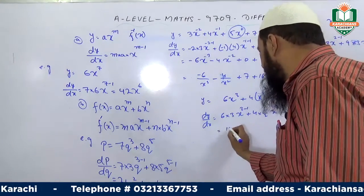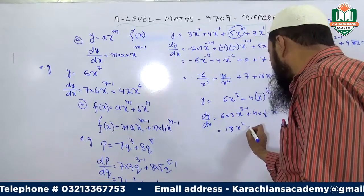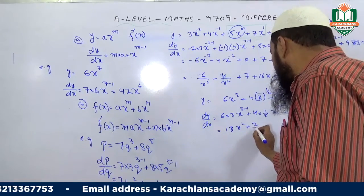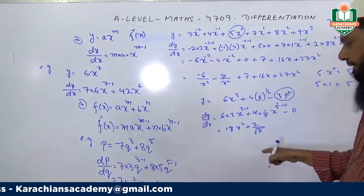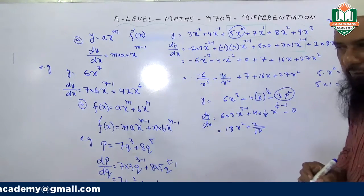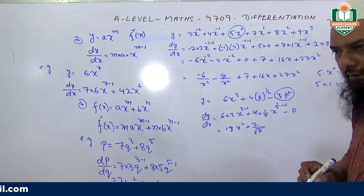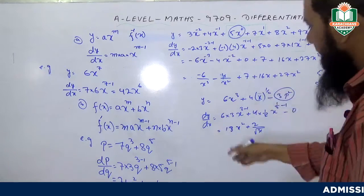This equals 18x^2 plus 2/√x. That's the answer.